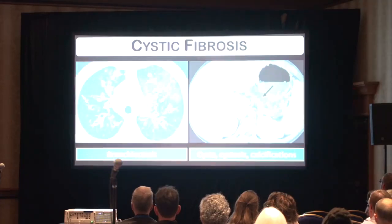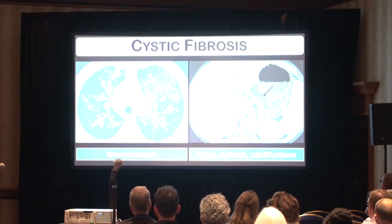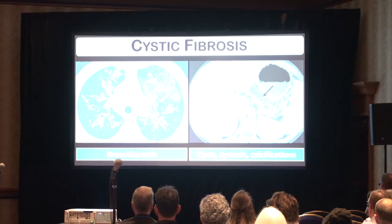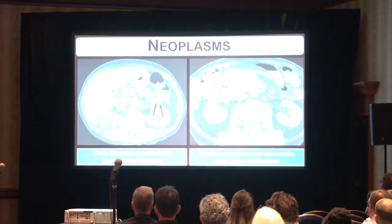Here is a patient with cystic fibrosis and associated changes within the pancreas. We can see on the lung windows of the CT that there is bronchiectasis. And then on the CT within the upper abdomen, we can see several cysts in the pancreas as well as several calcifications.